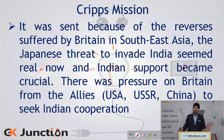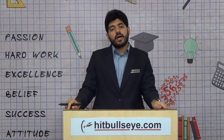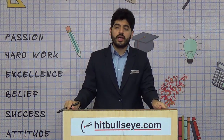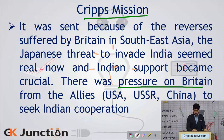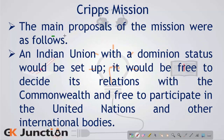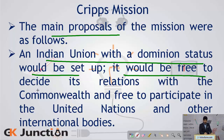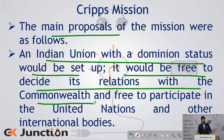The next highlight of the Indian independence struggle was the Cripps Mission. The cause was the same — to include Indians in the war effort — and there was pressure on Britain from allies in the war, namely the US, USSR, and China, to seek Indian cooperation. The main proposals included an Indian Union with dominion status, but with the added point that it would be free to decide its relations with Commonwealth countries and free to participate in other international associations such as the United Nations.